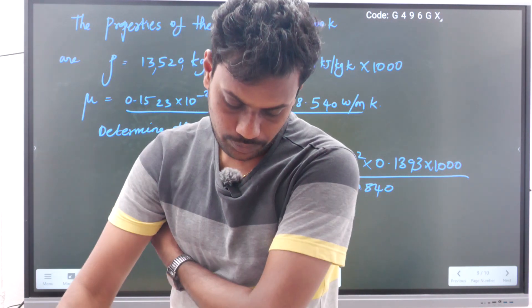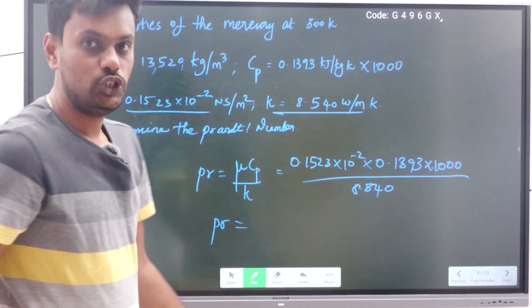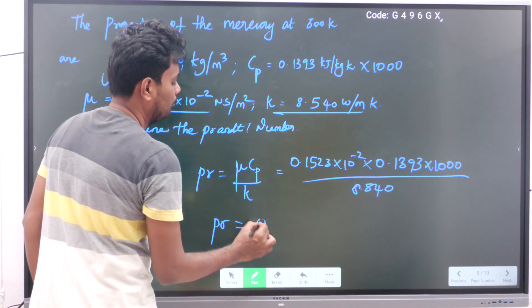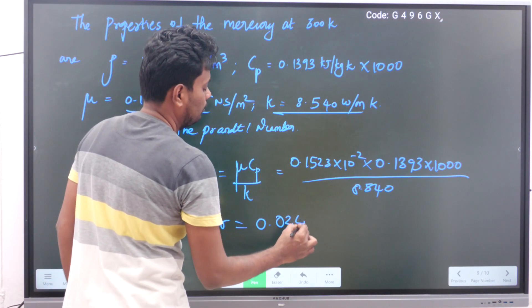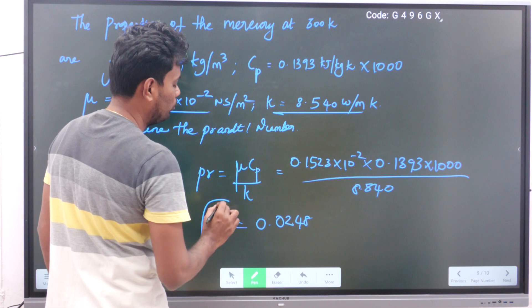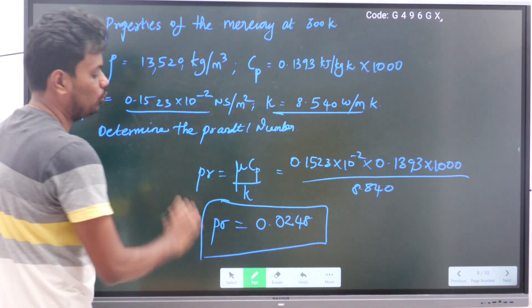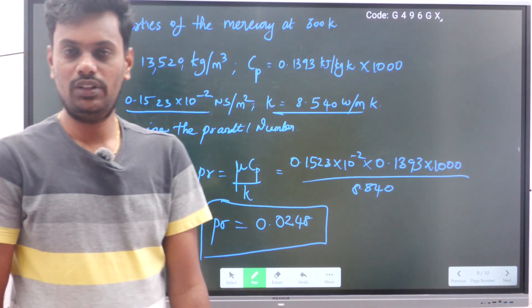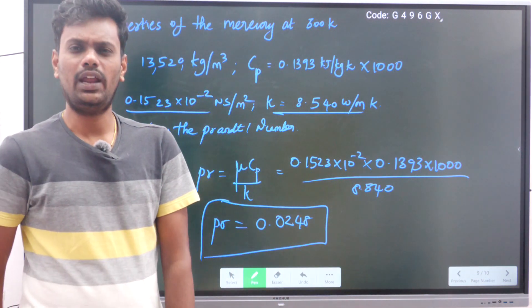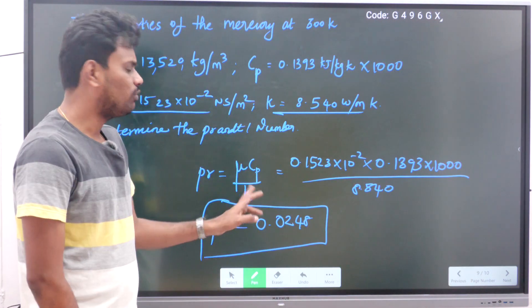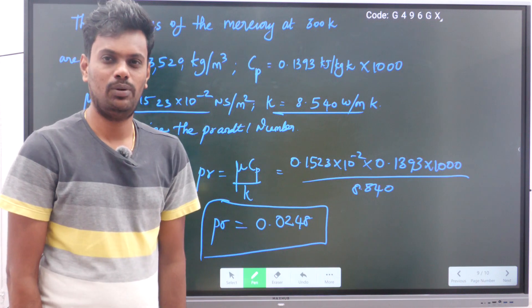What is the answer I am getting for Prandtl number? I am getting 0.0248. It has no unit. So this is the answer for the given problem. It's an easy problem, simple direct formula method.